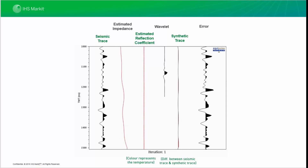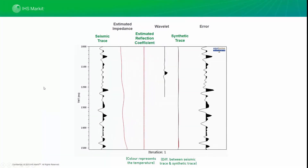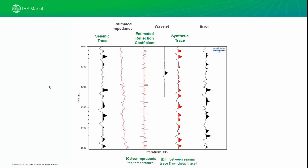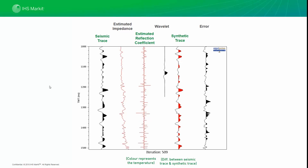In this video, we have the seismic trace and the estimated impedance low-frequency model. From these, we derive the estimated reflection coefficient, which is convolved with the wavelet to generate our synthetic trace. We then subtract the synthetic trace from the seismic trace to give us the error trace. You can keep an eye on the number of iterations being run. The estimated impedance model is being perturbed randomly, and the synthetic trace is starting to get some shape. As it gets to around 500 iterations, you can see the trace is starting to line up, although there is still a lot of error.